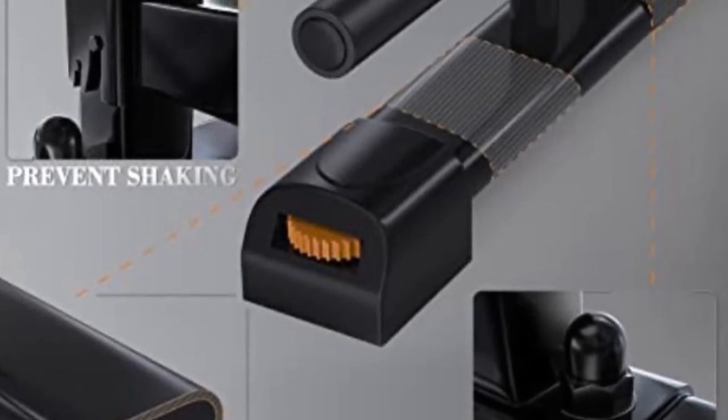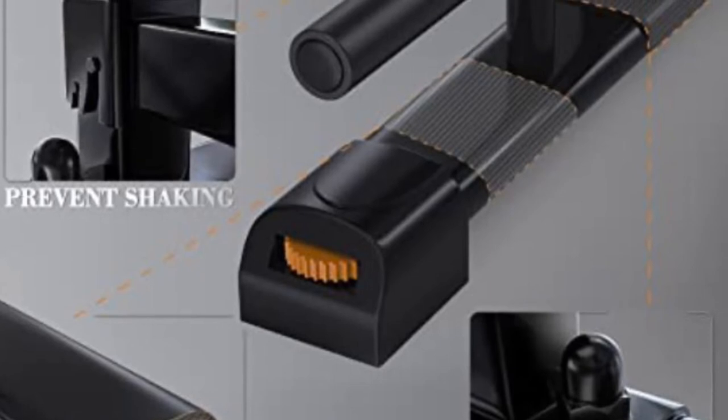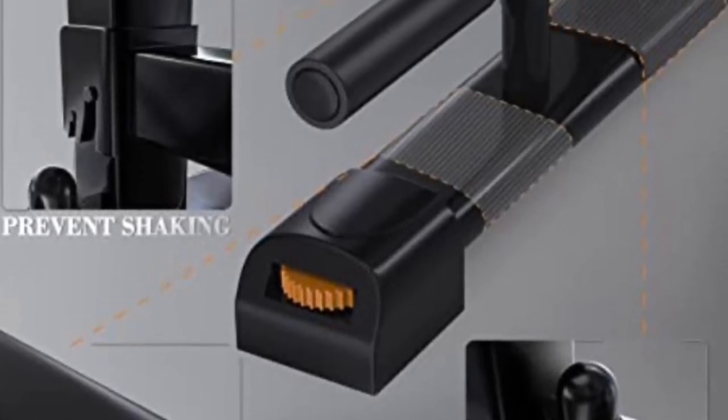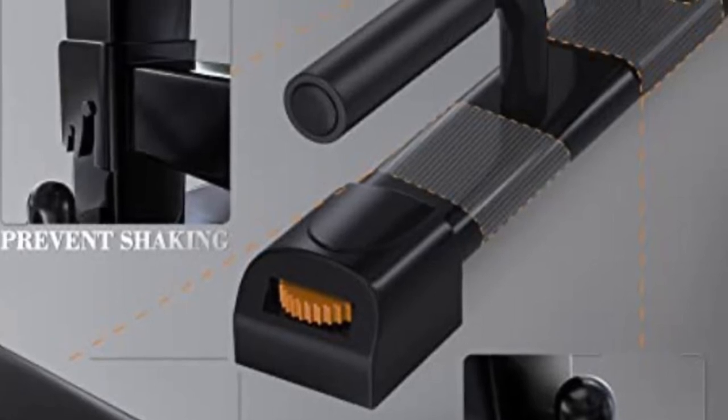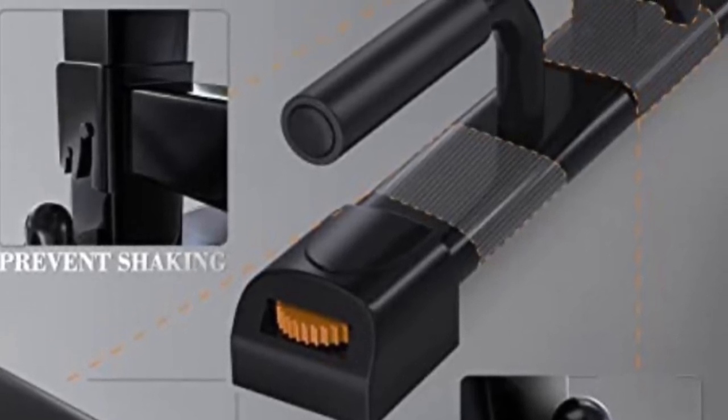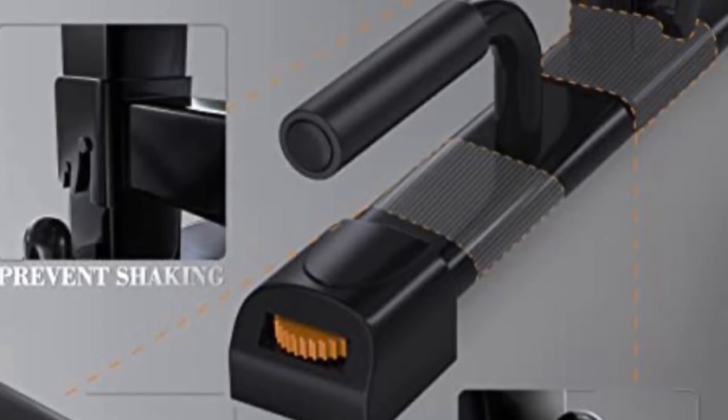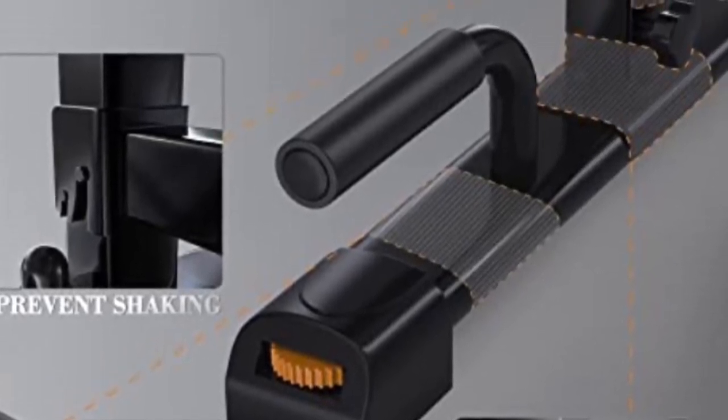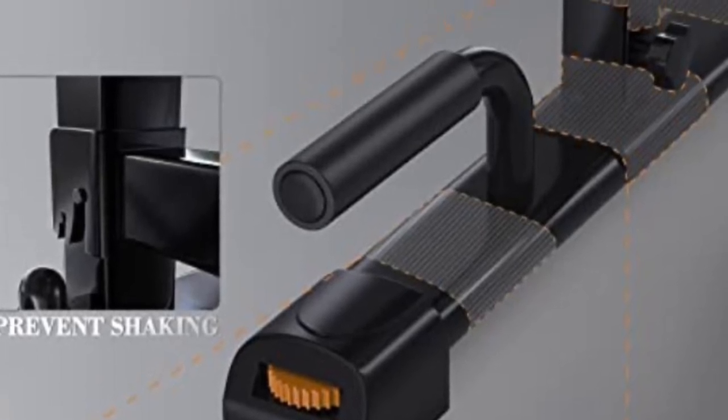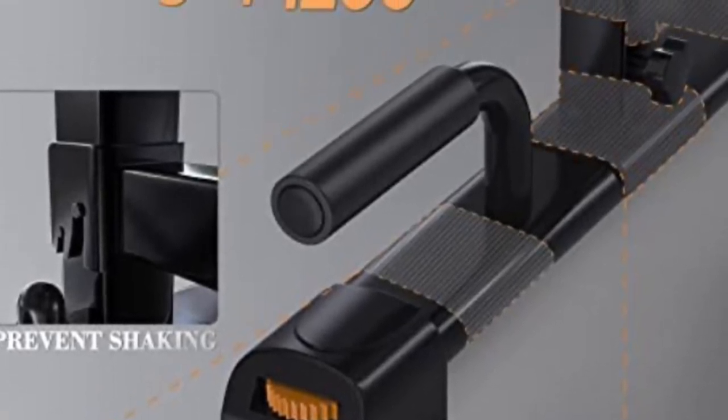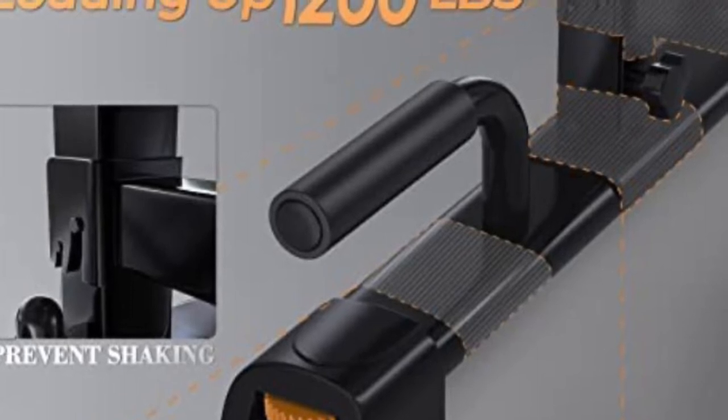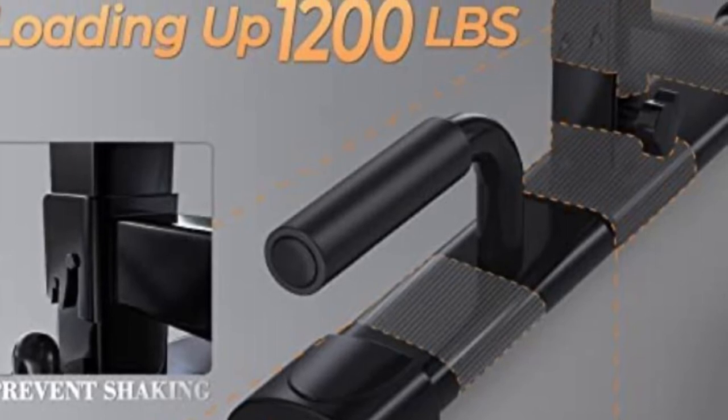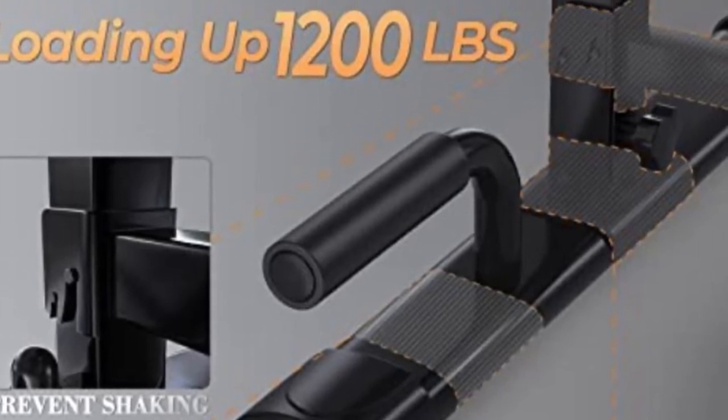I would very much recommend this product if you're into calisthenics, especially weighted calisthenics, and you want a way to do them from home. It's really thick and really well constructed. While I doubt the claims that it can hold 1200 pounds, it can support extremely heavy dips.